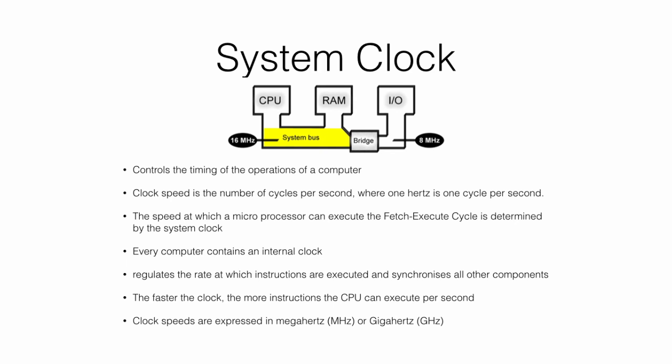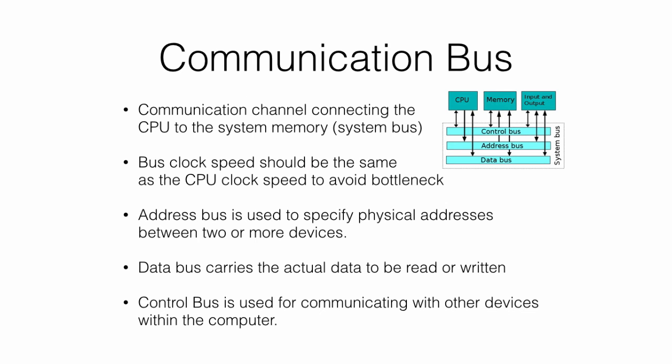Clock speeds are expressed in megahertz or gigahertz. In most cases, the CPU and memory share signalling characteristics and operate in synchrony thanks to the system clock.